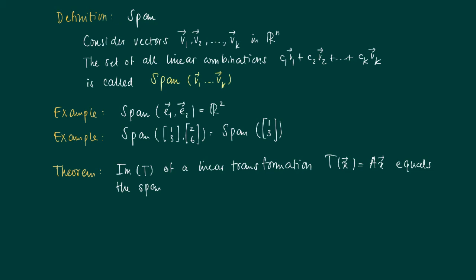This equals the span of the column vectors of A. So basically this says that the image of a matrix A is determined by the linear combinations that I can make with the columns of A.